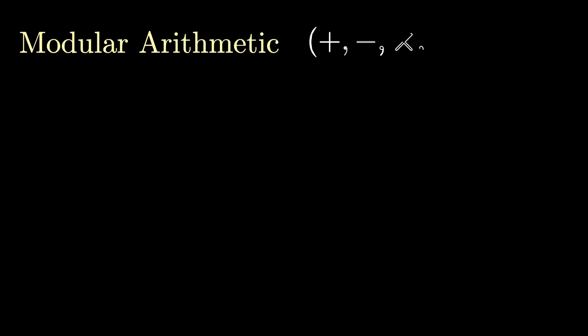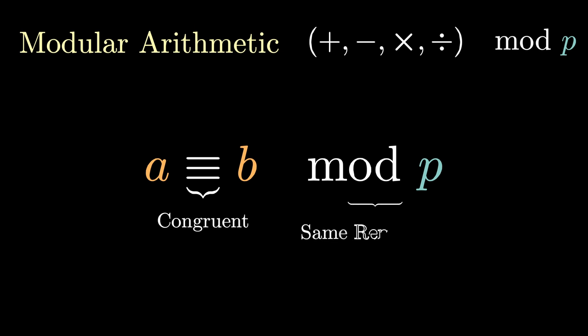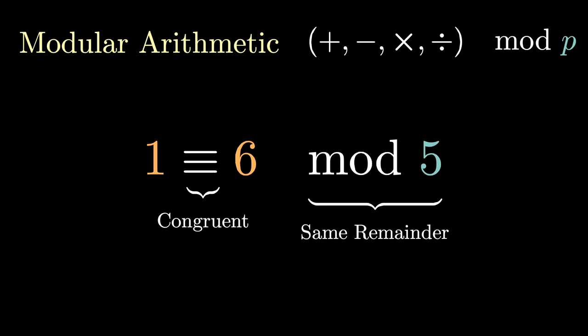One of the things Galois studied was modular arithmetic. Essentially, when we perform addition and multiplication, we do them mod some prime number p. We say two numbers a and b are congruent mod p if they have the same remainder after dividing by p. For instance, one is equivalent to six mod five, since they have remainder one when dividing by five. Let's work with only integers for this video.